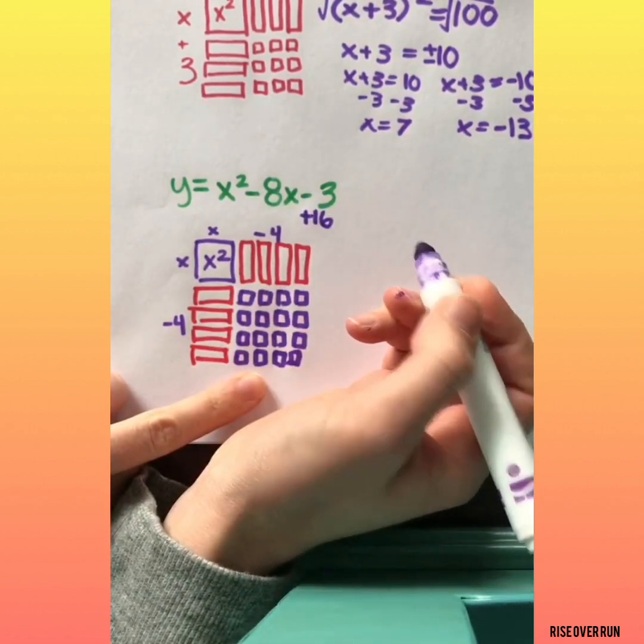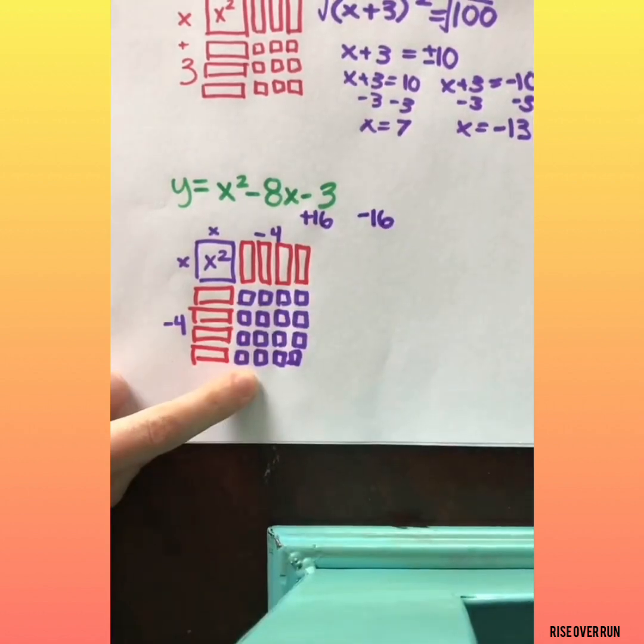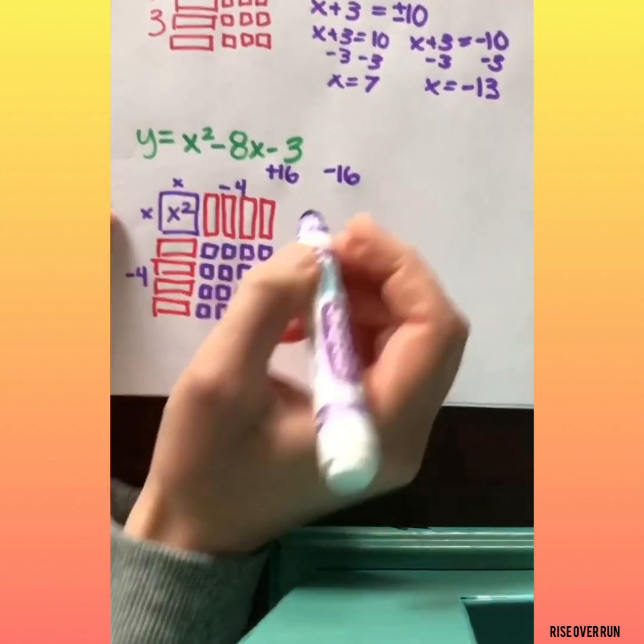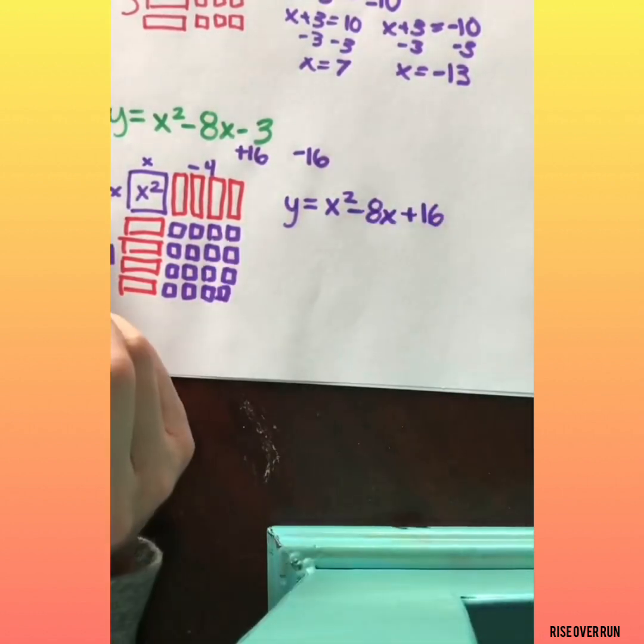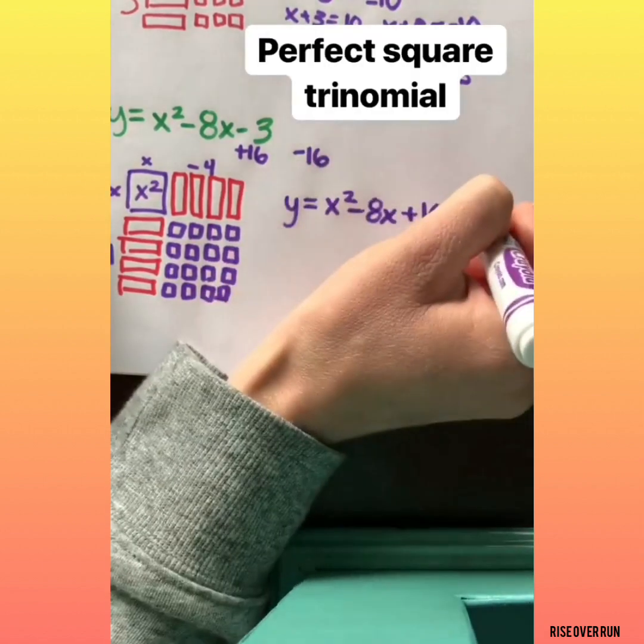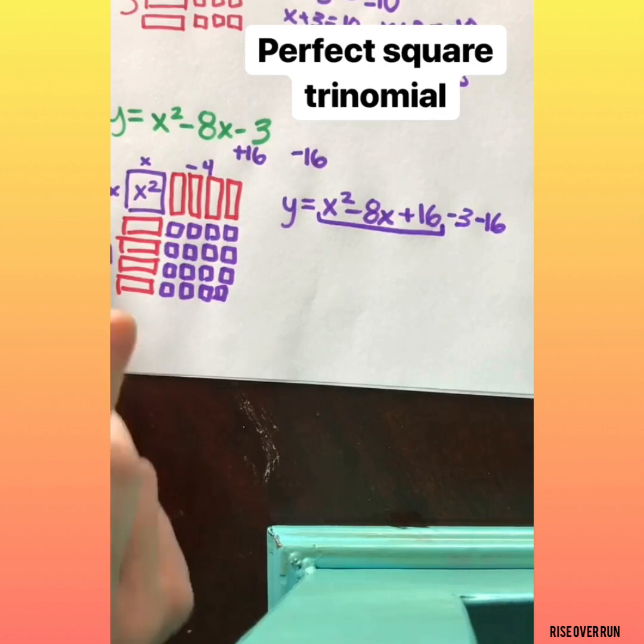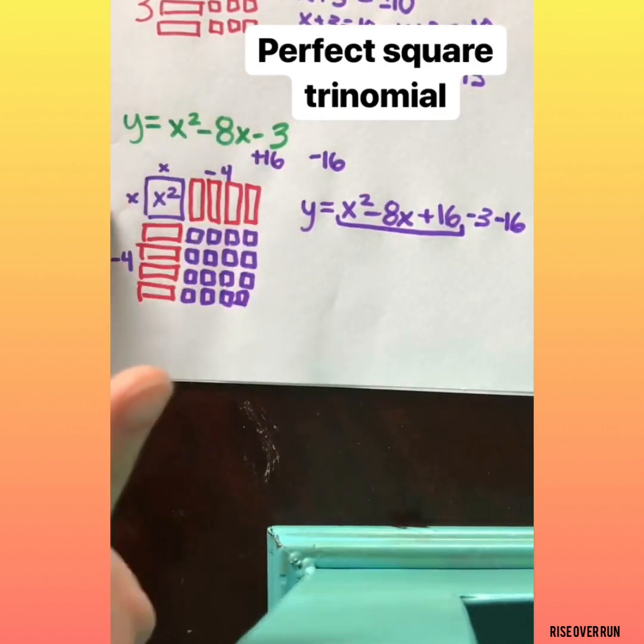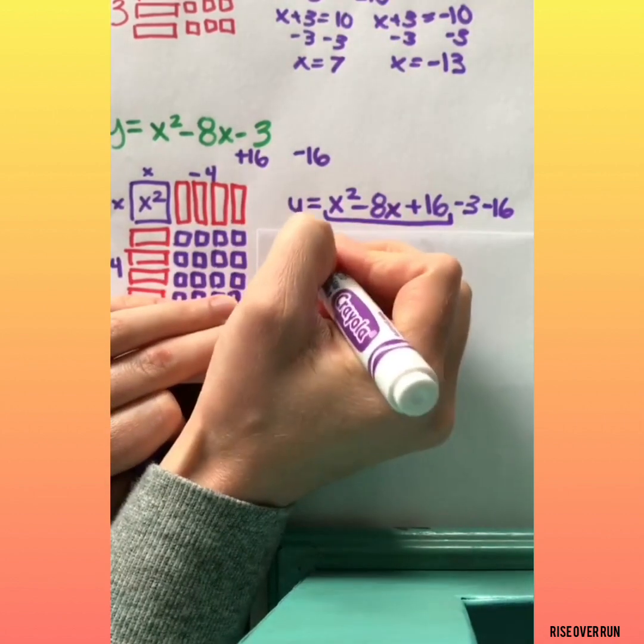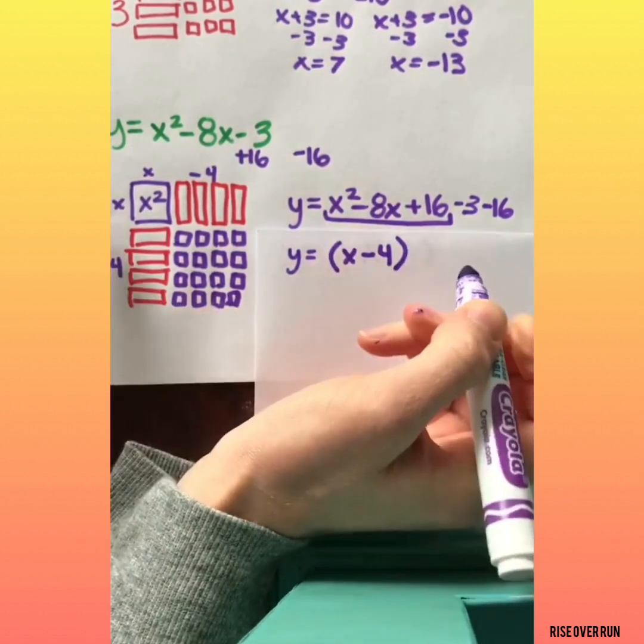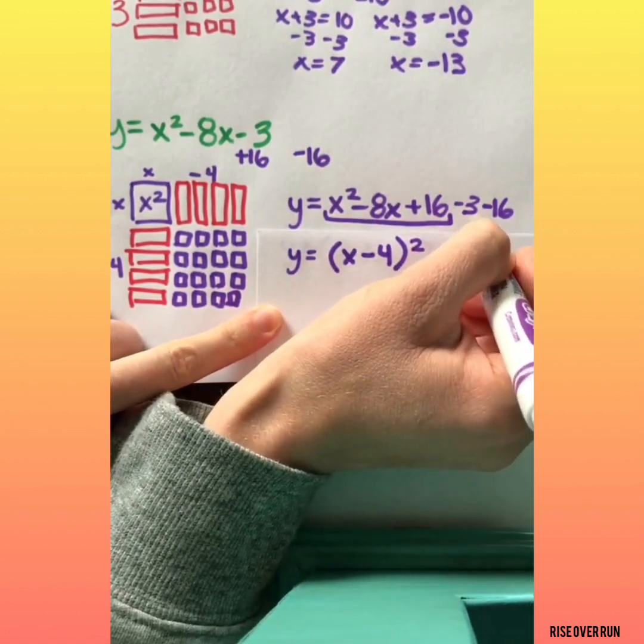So I want to have a plus 16. But I don't want to change the equation. So in order to keep this equation just like it is, I'm going to add 16 and I'm also going to subtract 16. Now let me rewrite this and we'll see how this is going to help us. Y equals x squared minus 8x plus 16. I still have that minus 3 and I need to take away the 16 I added. Now right here in the front I have a perfect square trinomial. That's going to help me rewrite this equation in a format.